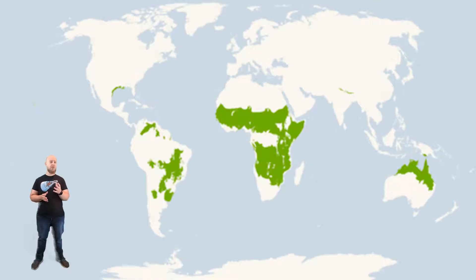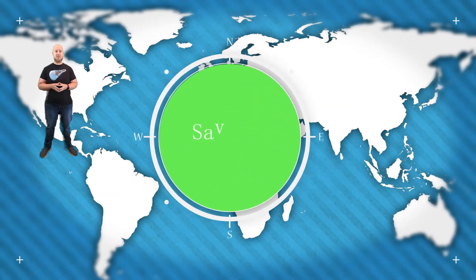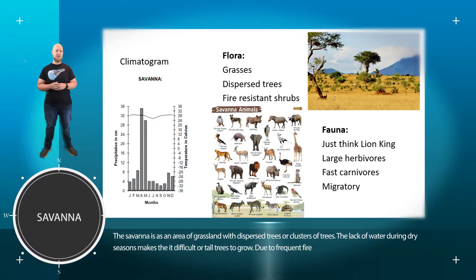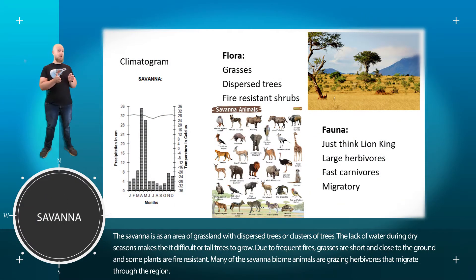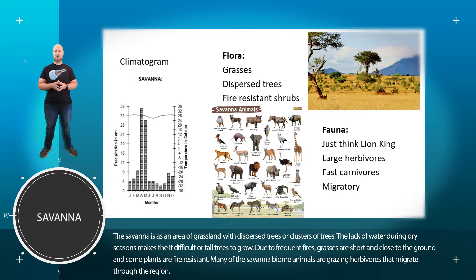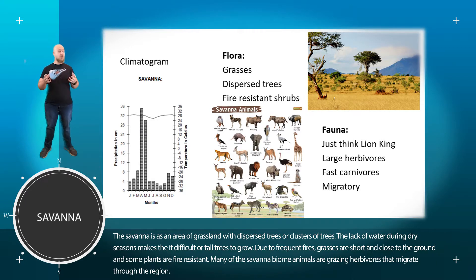When you are thinking of the savannah, you can realistically just imagine The Lion King and you're going to get pretty close. The savannah's climate really has two seasons: a very rainy season and a very dry season. Because you are still relatively close to the equator, the temperature throughout the year is more or less the same.